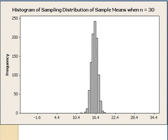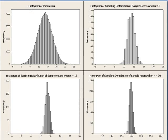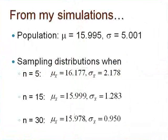Now we can see the 4 graphs simultaneously. Notice the values of the standard deviation of each graph as they appear. From my simulation data, we can see that the means of the sampling distributions remain close to 16 in all cases, but the standard deviation gets smaller as n gets larger. Did you think that increasing the sample size may decrease the spread of the sampling distribution? If so, you thought correctly.